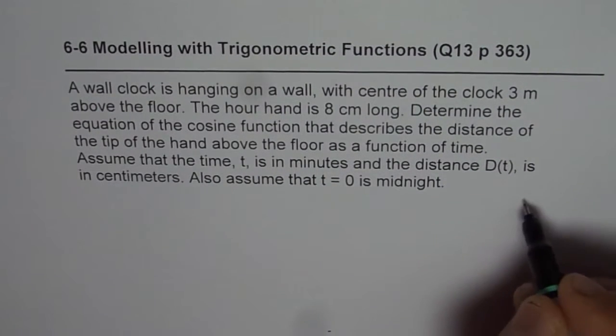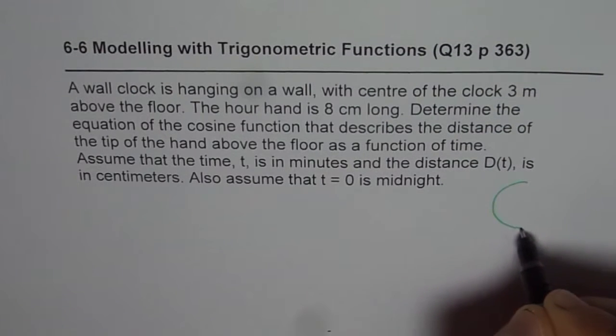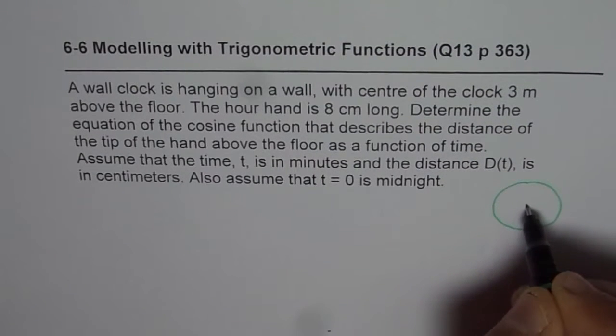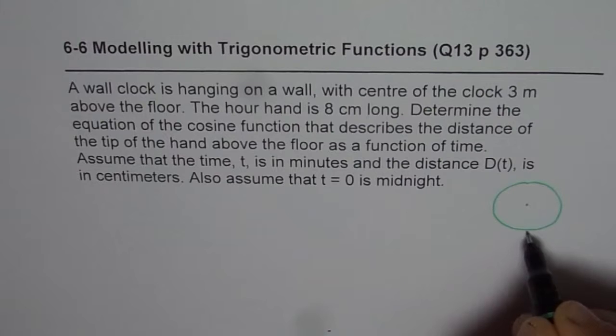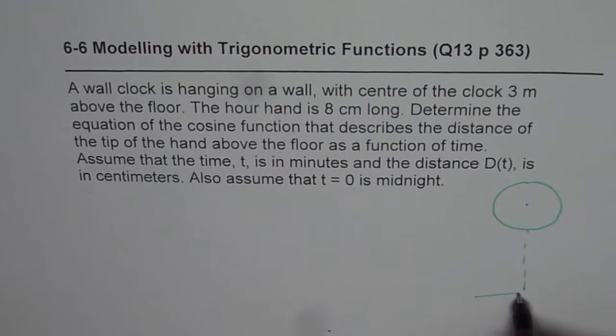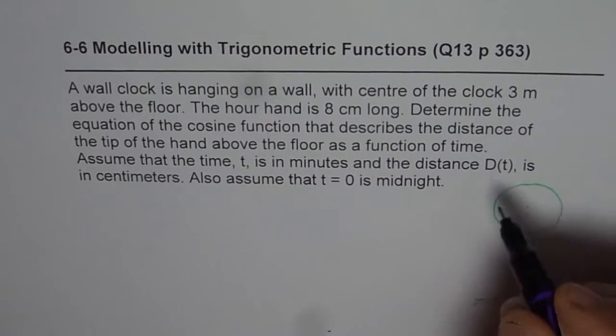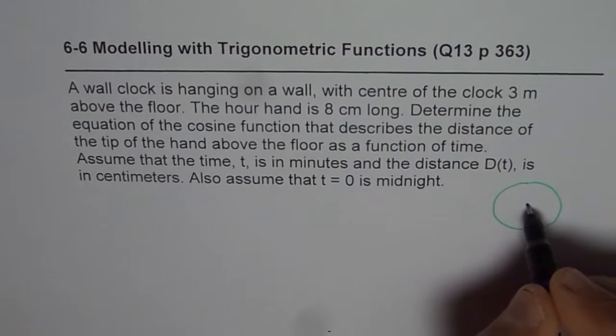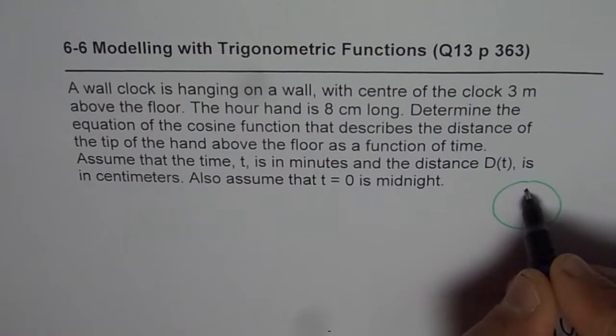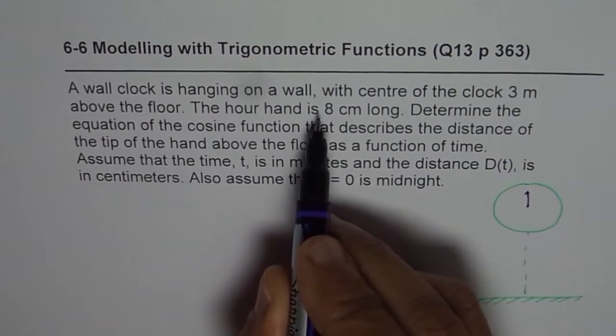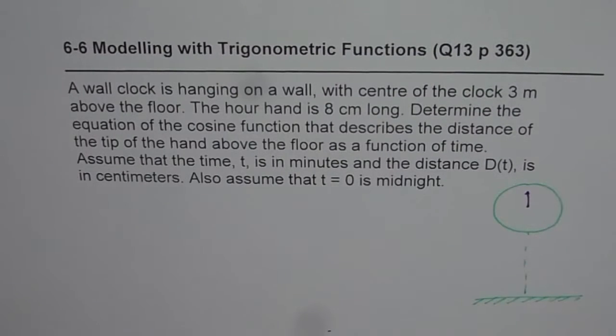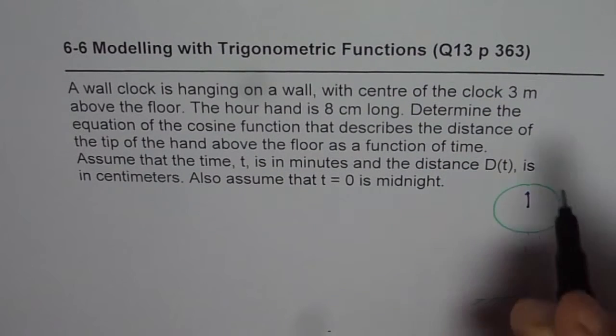So let us assume that we have a clock here on the wall. So that's the clock. And let us say this is the floor for us. So what we are given here is that the hour hand starts at this point and the length of hour hand is 8 centimeters. So this is 8 centimeters.